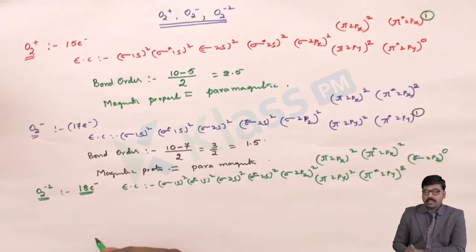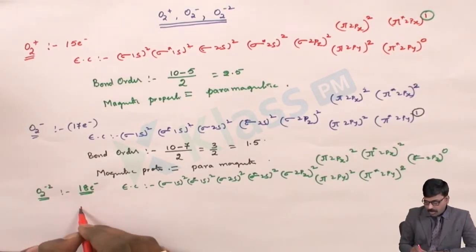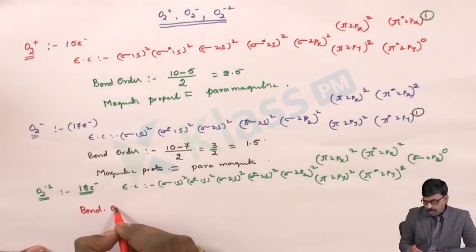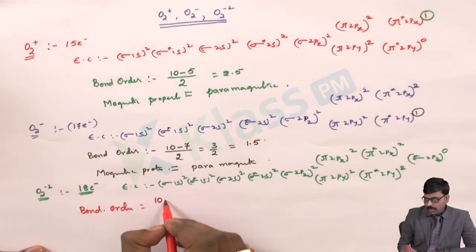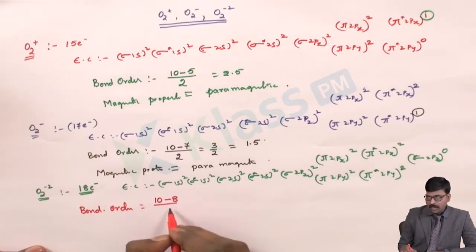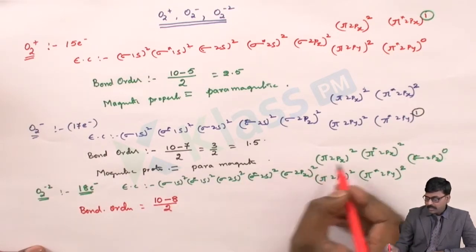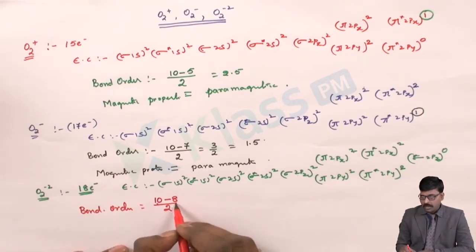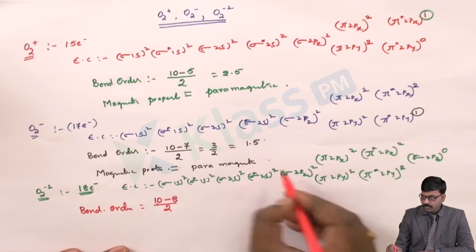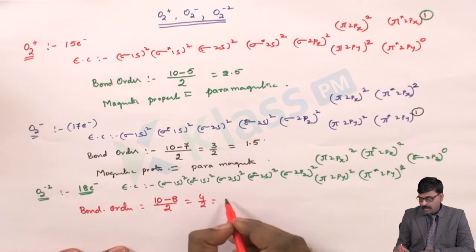For the bond order of O2 minus 2: there are 10 bonding electrons and 8 antibonding electrons, so the bond order is (10 minus 8) divided by 2, which is 4 by 2, equal to 2.